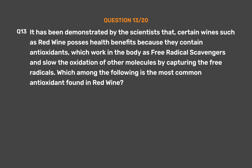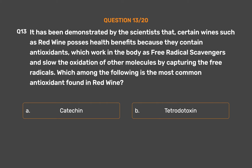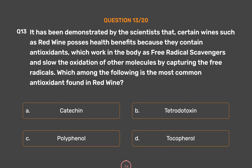Question No. 13. Scientists have demonstrated that certain wines such as red wine possess health benefits because they contain antioxidants, which work in the body as free radical scavengers and slow the oxidation of other molecules by capturing free radicals. Which among the following is the most common antioxidant found in red wine? Option A: Catechin. Option B: Tetrodotoxin. Option C: Polyphenol. Option D: Tocopherol. The correct answer is Option C: Polyphenol.